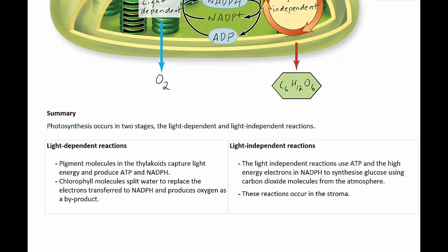In summary, photosynthesis occurs in two stages: the light-dependent reactions and the light-independent reactions. In the light-dependent reactions, pigment molecules in the thylakoid membrane capture light energy and produce ATP and NADPH. Chlorophyll molecules split water to replace the electrons that are transferred to NADPH and produce oxygen as a byproduct. The light-independent reactions use ATP and the high-energy electrons in NADPH to synthesise glucose using carbon dioxide molecules from the atmosphere, and these reactions occur in the stroma, whereas the light-dependent reactions occur in the thylakoid membrane.